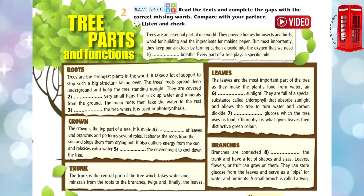Every part of a tree plays a specific role. Roots: Trees are the strongest plants in the world. It takes a lot of support to stop such a big structure falling over. The trees' roots spread deep underground and keep the trees standing upright. They are covered with very small hairs that suck up water and minerals from the ground. The main roots then take the water to the rest of the tree where it is used in photosynthesis.